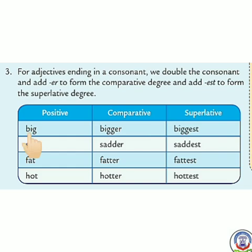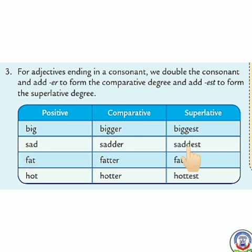Jaise B-I-G, big. G consonant hai, so G se poora hota hai, toh hum G ko double kar denge: B-I-double G-E-R, bigger. Aur superlative degree mein B-I-double G-E-S-T, biggest. Big, bigger, biggest. Same way: sad, sadder, saddest — double D ho gaya. Fat, fatter, fattest. Hot, hotter, hottest.